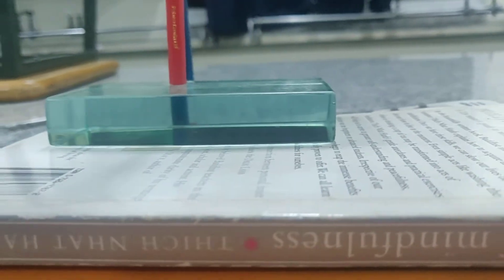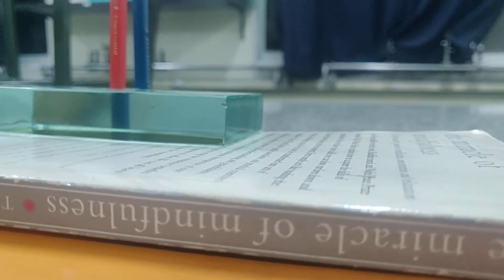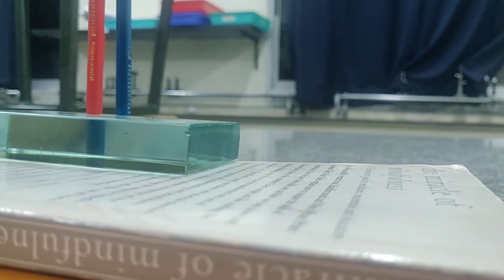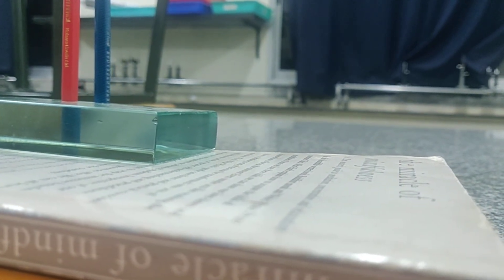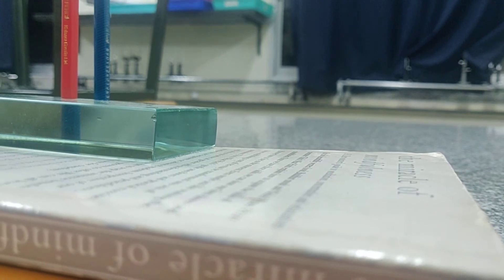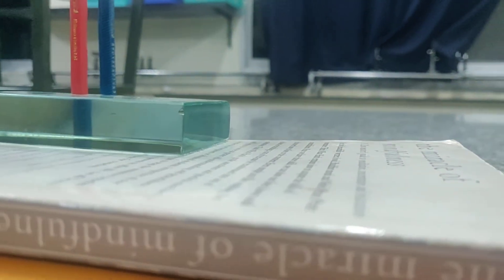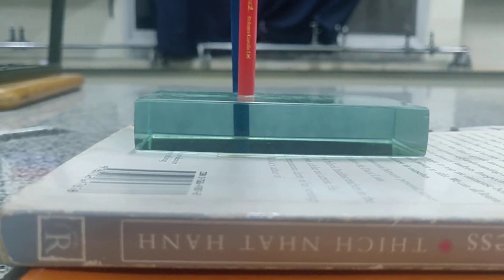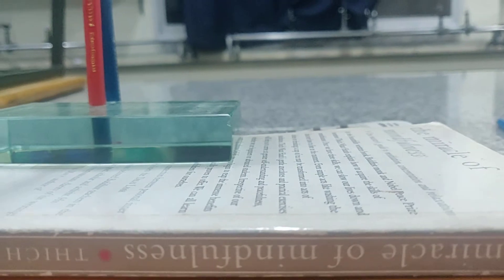As I change my viewing angle, I can clearly see there is a lateral shift of the blue pencil. But the image formed by my eye of the blue pencil and the red pencil remain in line. At any viewing angle, the red pencil and the image of the blue pencil move together.